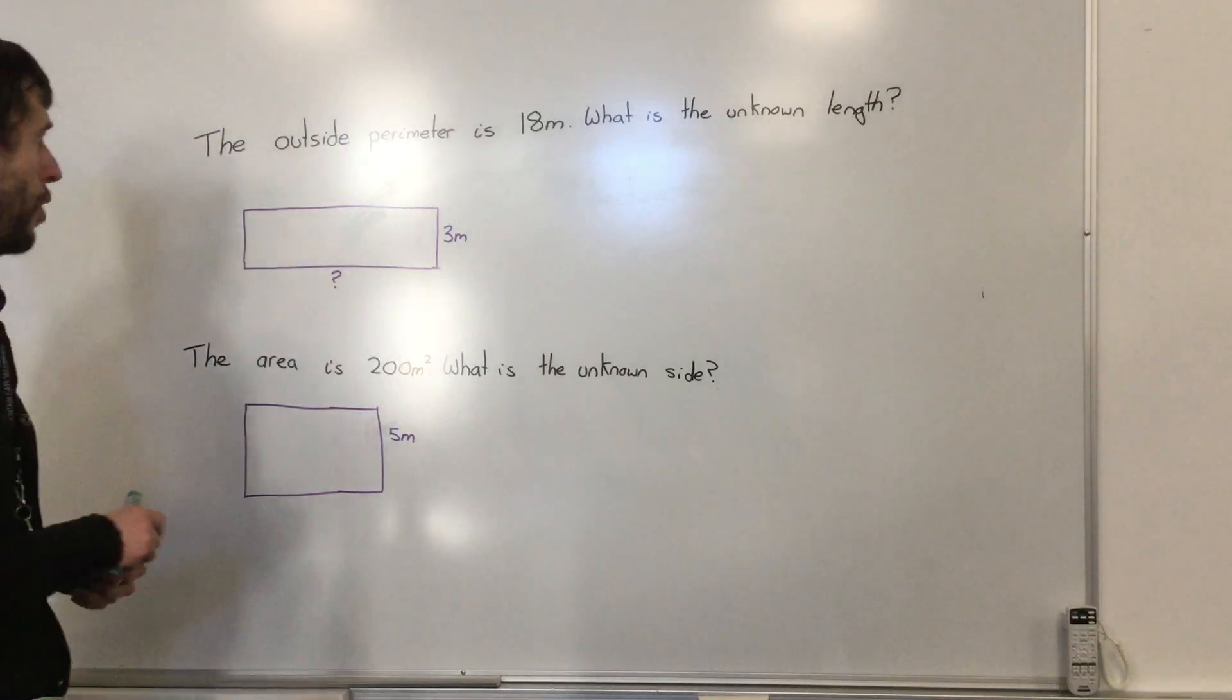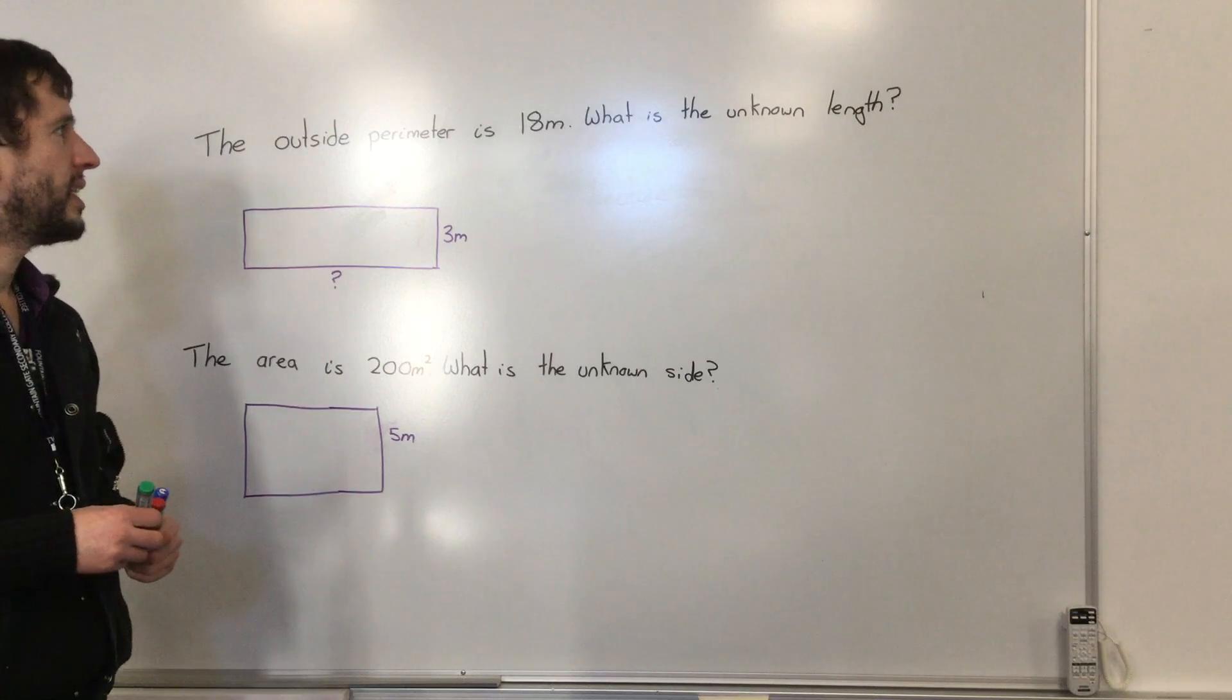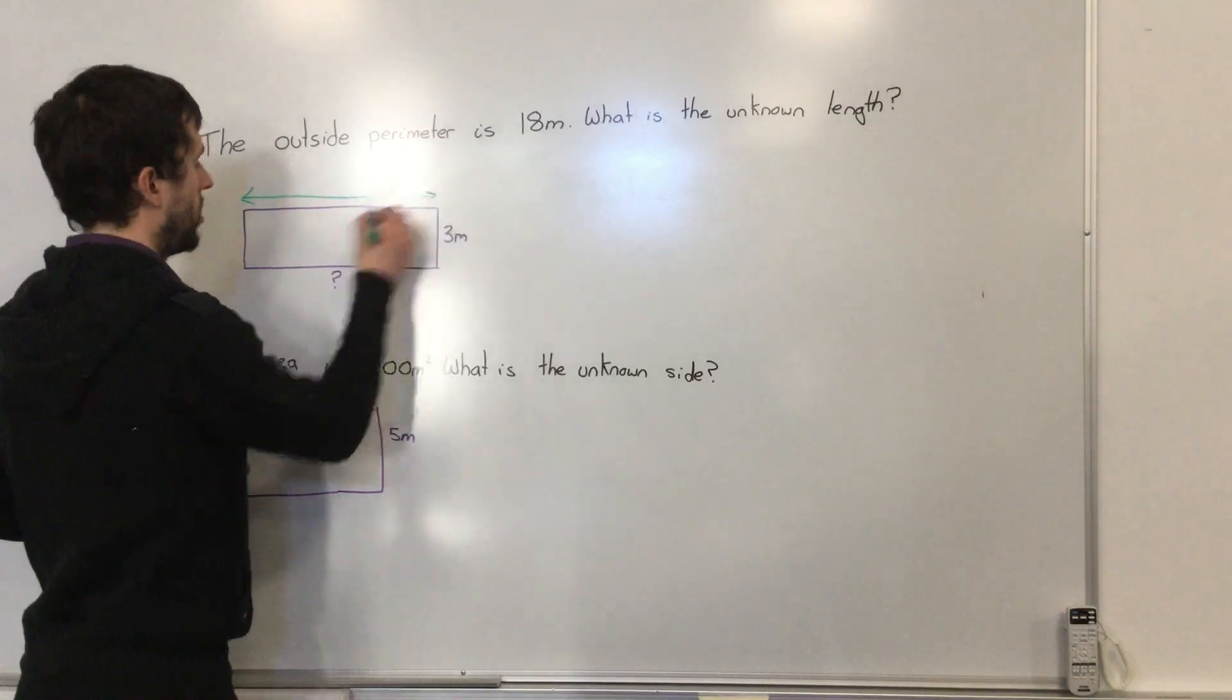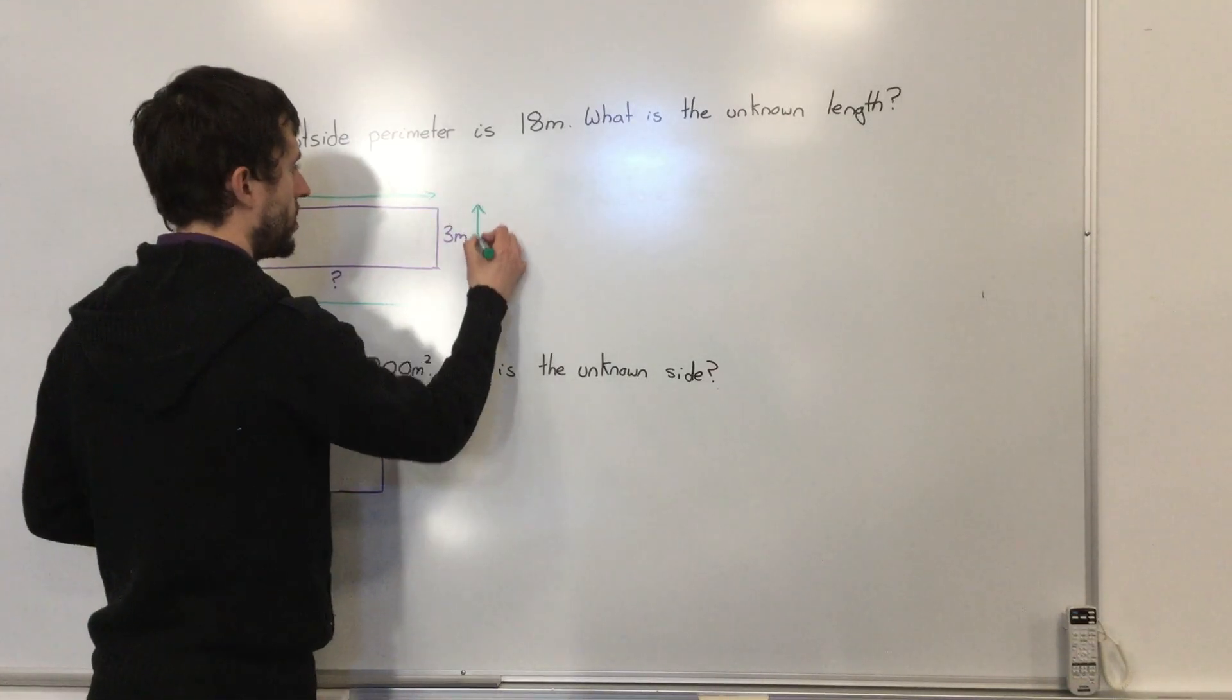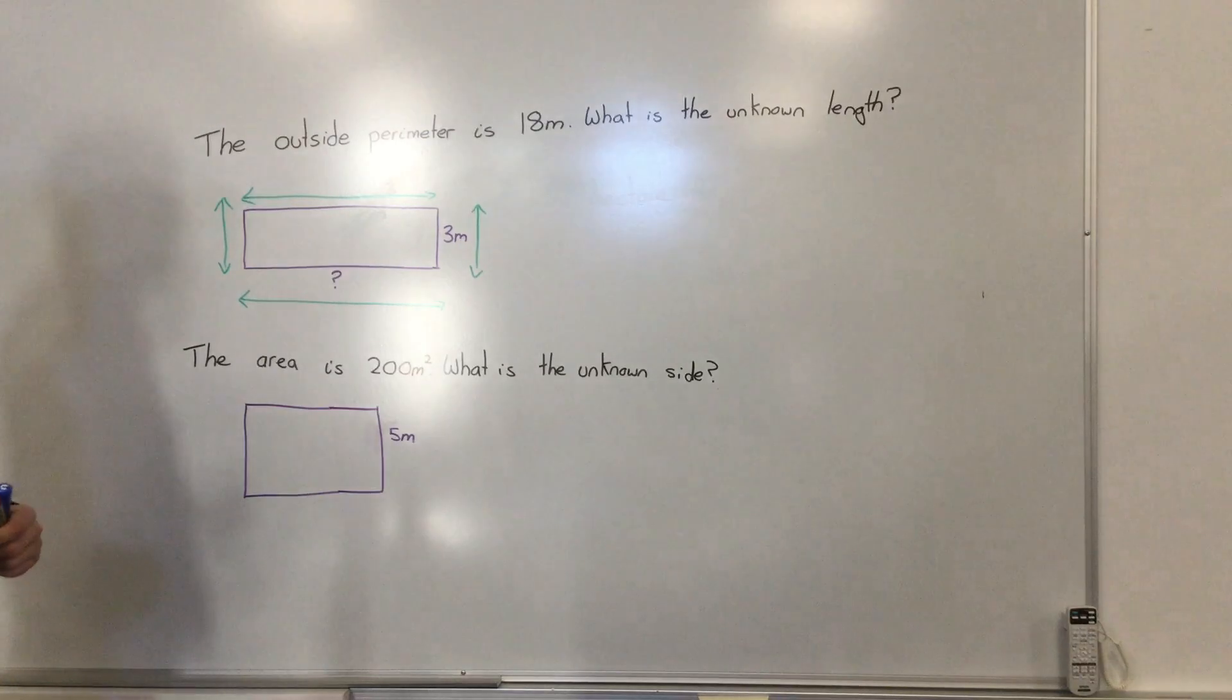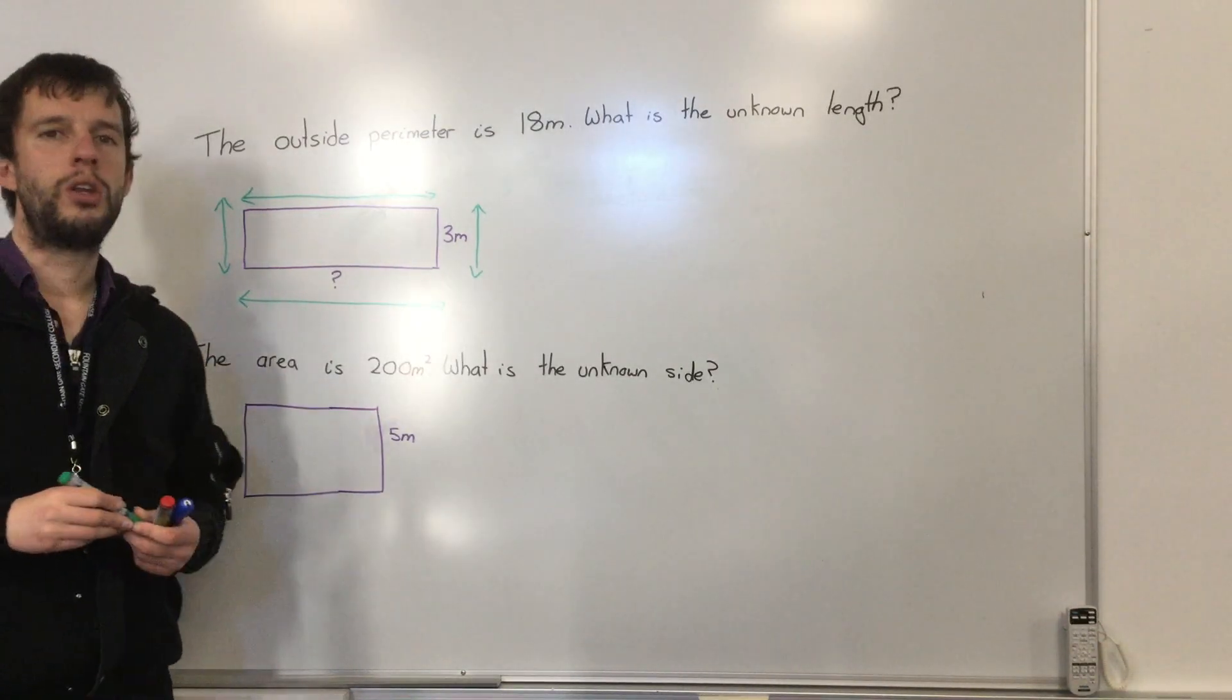So let's read it and break it down. The outside perimeter is 18 meters, so that means perimeter is outside. We're talking about this plus this plus this and plus this. So adding the fence of our rectangle equals 18. We'd like to know what is the unknown length.